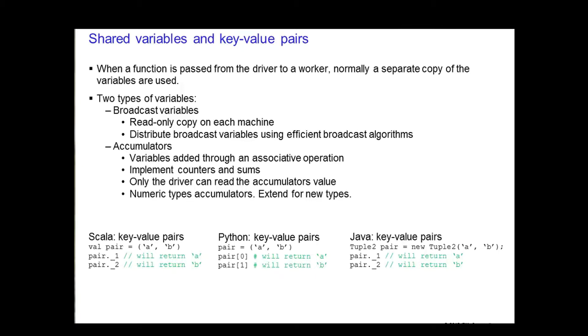Broadcast variables allow each machine to work with a read-only variable cast on each machine. Spark attempts to distribute the broadcast variable using efficient algorithms. As an example, broadcast variables can be used to give every node a copy of a large dataset efficiently.